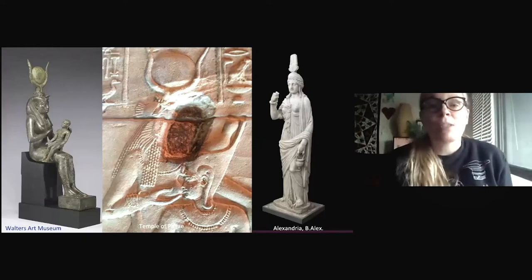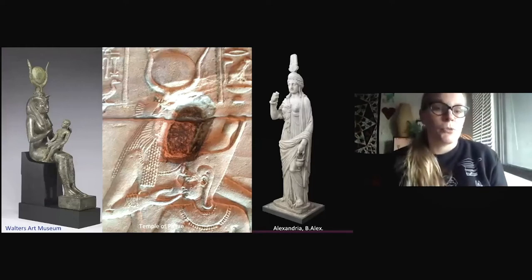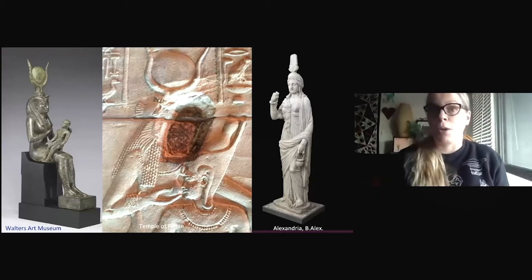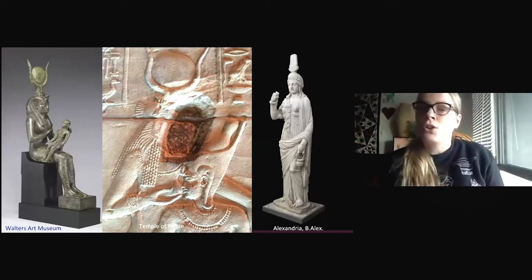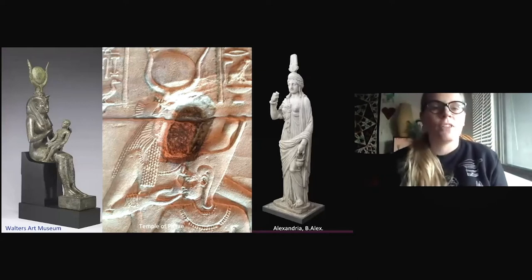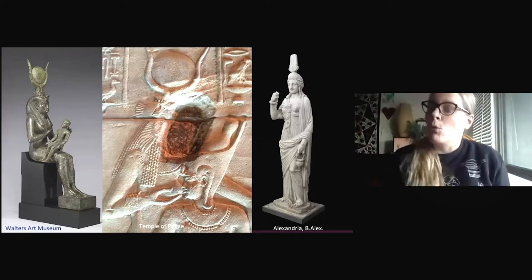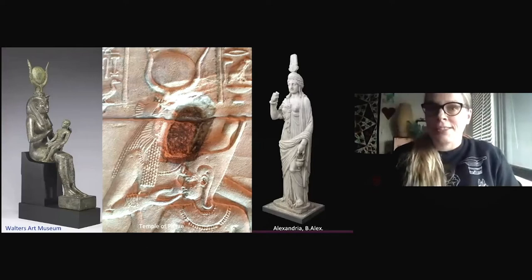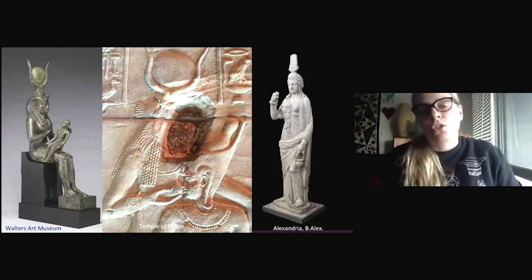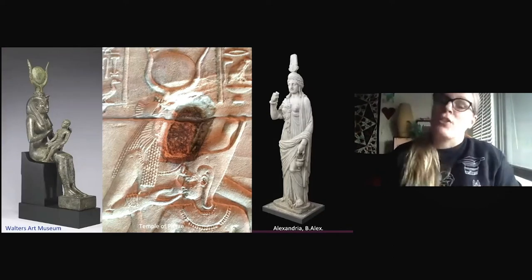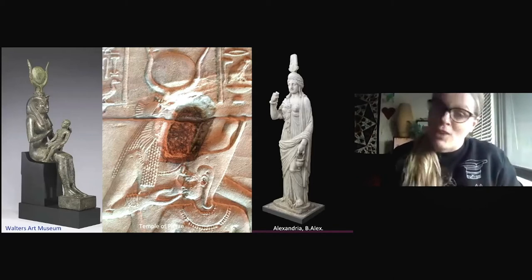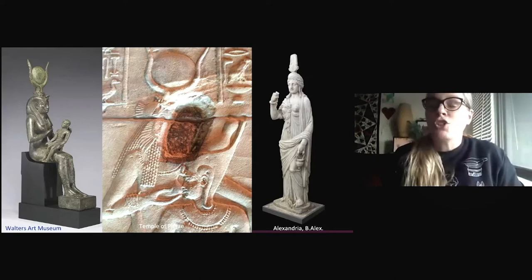The goddess Isis was by far the most popular of the ancient Egyptian gods in antiquity, beyond Egypt, but also one of the main goddesses in Egypt. She is the daughter of the earth god Geb and of the sky goddess Nut. Most importantly, she is the sister and wife of the god Osiris. The most famous story about Isis narrates how after her brother and husband Osiris was killed by the other brother Seth and dismembered, she managed to piece him back together and bring him back to life.